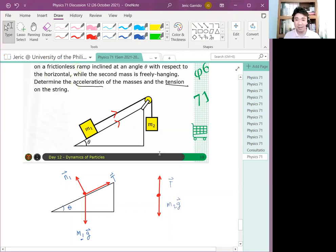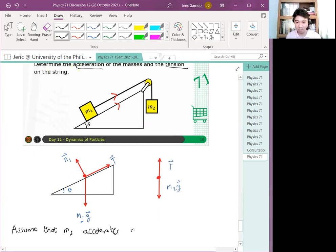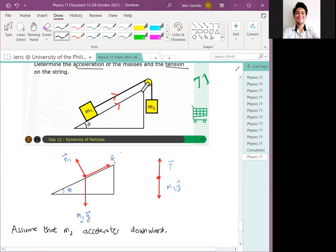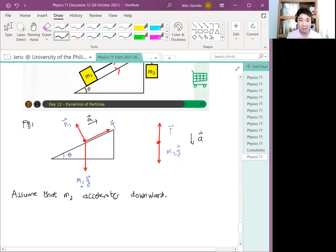Now, let's set up the equations of motion. As I said, in this problem, assume that M2 accelerates downward. And thus, what is the direction now of M1? Up or down? Up the incline or down the incline? Up the incline. It should be up the incline, right? Therefore, this is the direction of the acceleration.